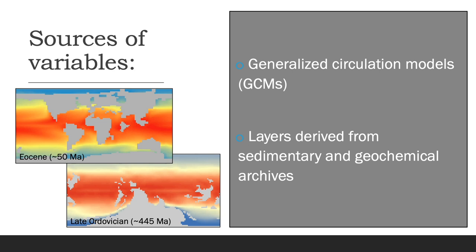There are two primary types of spatially explicit paleoclimate data for ecological niche modeling. The first are layers from generalized circulation models, otherwise known as climate models or GCMs. The other way to generate layers is to derive them from sedimentological and geochemical archives. It's often necessary to derive your own layers in this way because GCM outputs are not necessarily available for all time periods in Earth history.